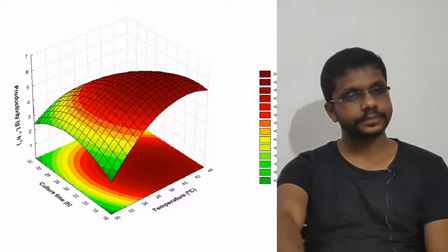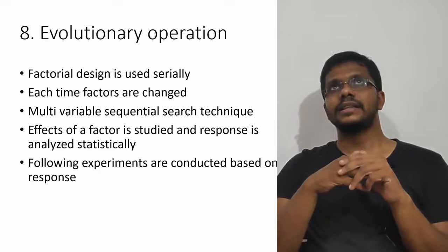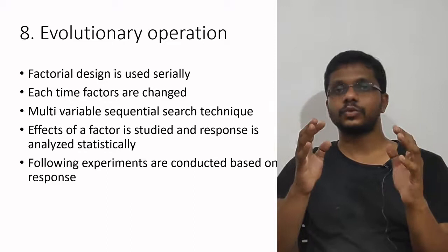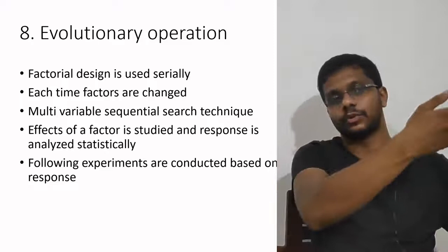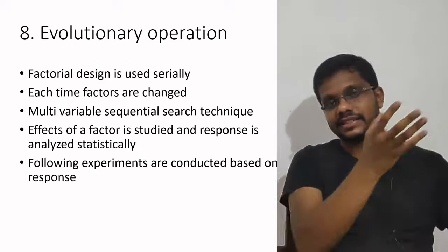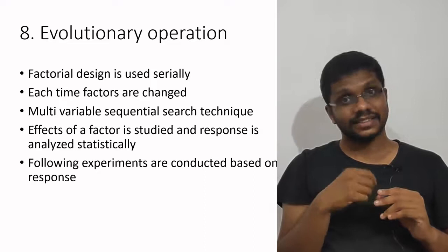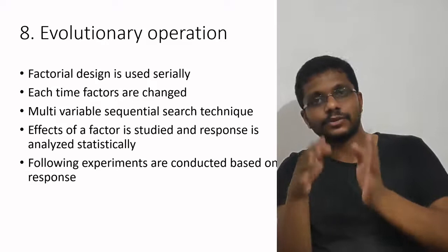Next is evolutionary operation. It is actually a factorial design applied in series. Instead of doing a complete factorial design all at once, we apply the factorial design to only two or three factors at a time. Once done, we get a better medium, then select a few other factors for the next round, serially improving the medium. Each time we change factors, we analyze them for one round, and in the next round select another two or three factors. It is a multivariable sequential search technique — changing two or more variables at a time, then doing it again sequentially with different variables.